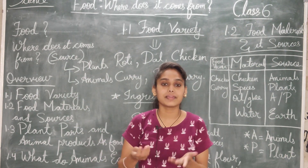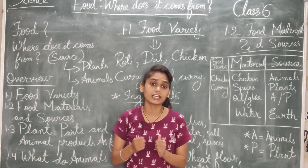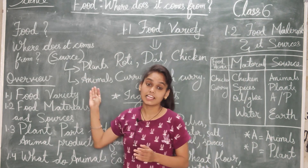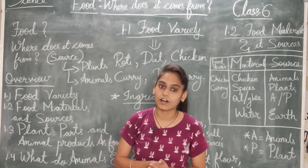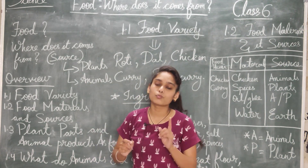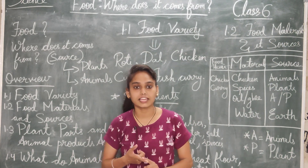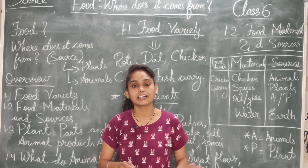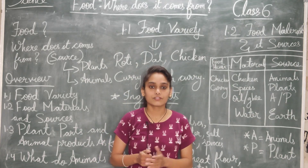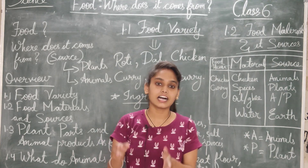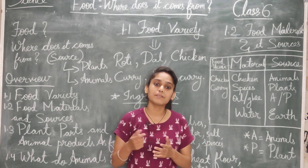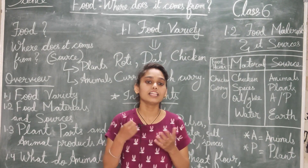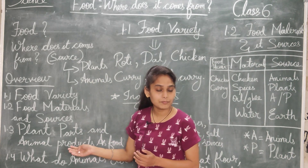Food कहां से आया उसको हम source बोलते हैं। Food के main source क्या होंगे? That is plants and animals. Animals and plants are the main source of food. Water and salt को छोड़कर हमें plants और animals से ही food का source मिलता है, क्योंकि water and salts are naturally occurring, provided by the earth।